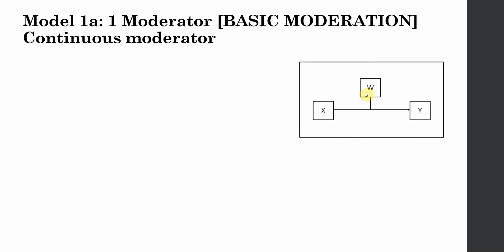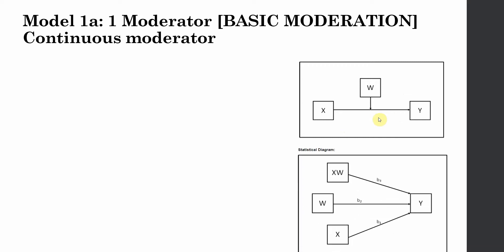Here is Model 1, where X is your independent variable, Y is your dependent variable, and W is your moderator pointing towards the relationship. A moderator either strengthens or weakens an existing relationship. In the statistical diagram, you create the interaction term between your IV and moderator, and look at its impact on your DV.